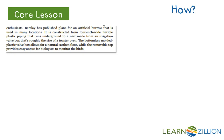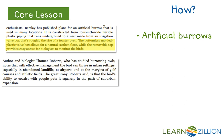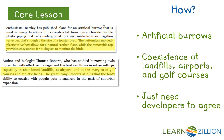Finally, how — my funky H. How is this happening? How can we solve it? Our central idea is that they can and should be safe. Using a valve box roughly the size of a toaster oven, the bottomless molded plastic valve box allows for a natural earthen floor while the removable top provides easy access for biologists to monitor the birds — so we can build them birdhouses. Another way they can thrive is by allowing them to live in areas like landfills, airports, and golf courses — making those spaces shared instead of trying to evict them. They just need developers to agree and help make this happen.